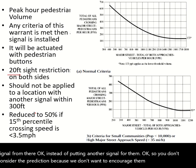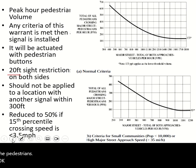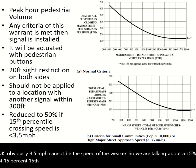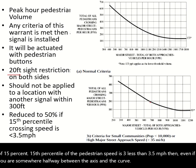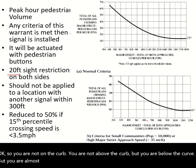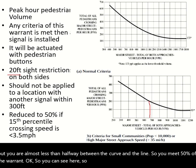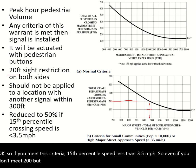The pedestrian warrant volumes can be reduced up to 50 percent if the 15th percentile pedestrian speed is less than 3.5 miles per hour — meaning even if you are only halfway between the axis and the curve, that is sufficient to satisfy the warrant. For example, if the curve requires 200 pedestrians but you meet this speed criterion, 100 pedestrians would be enough.